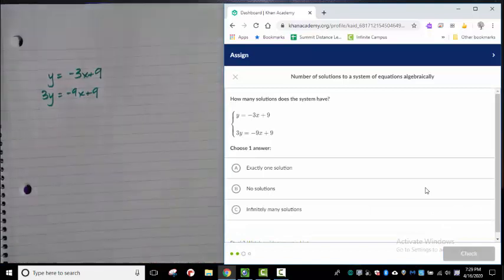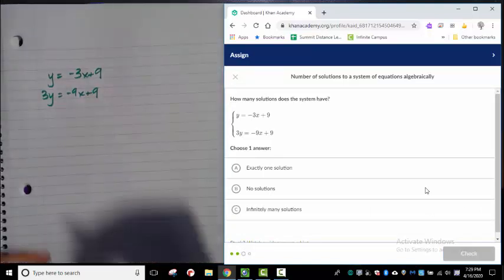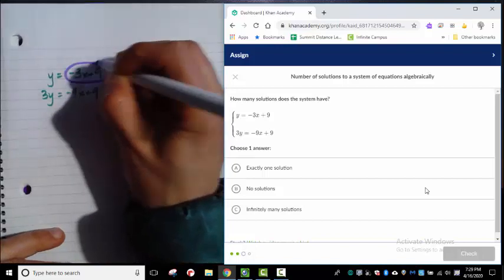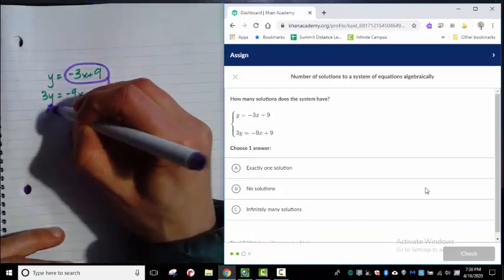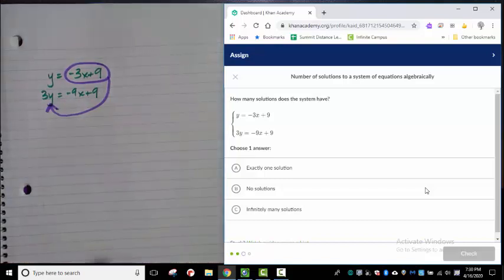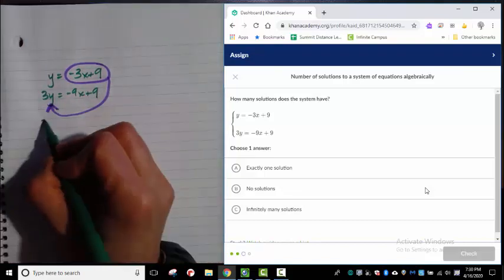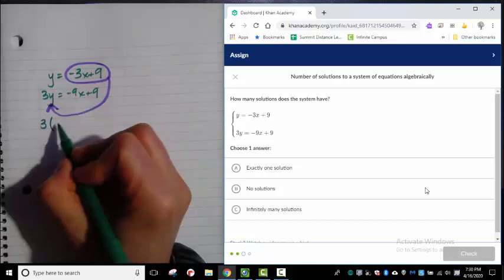This one, I'm probably going to solve by substitution because the y is already solved for here. It's already isolated. So I can just take this top part and substitute in for the y in the second equation. So I'm going to have 3 times. And instead of y, I'm going to write negative 3x plus 9.